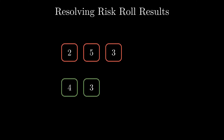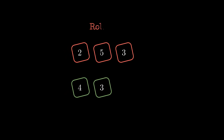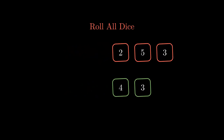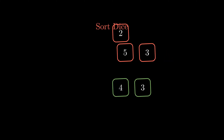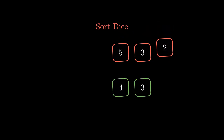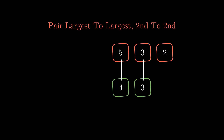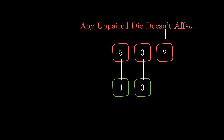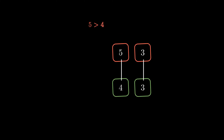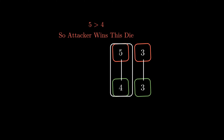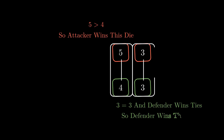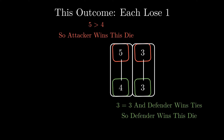Here's how to resolve Risk rolls. Both players roll their dice corresponding to the number of armies they are attacking or defending with. Whoever rolled more dice sets aside their lowest die so that both players are comparing the same number of dice. So with 3 attacking and 2 defending, we'd compare 2v2. You match the highest die vs highest die and second highest vs second highest. The higher number wins and the defender wins ties. If you lose one of the pairings, you lose an army.